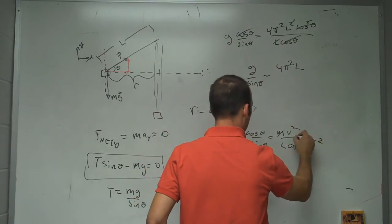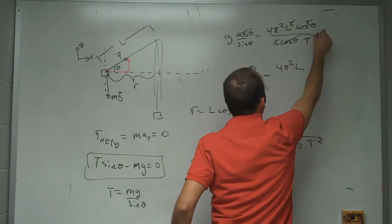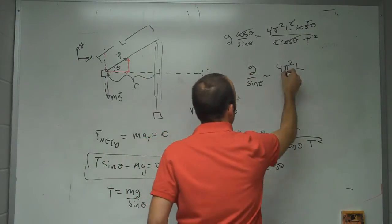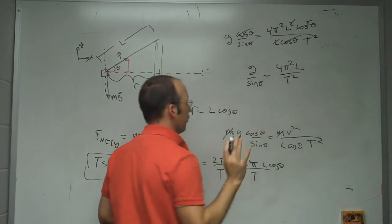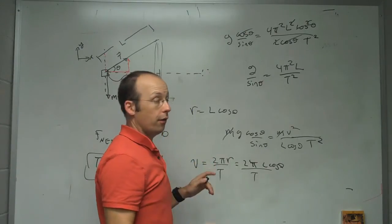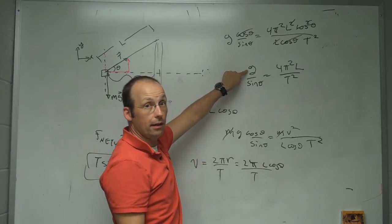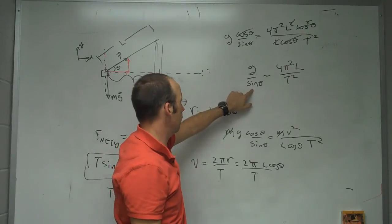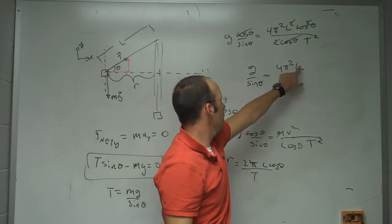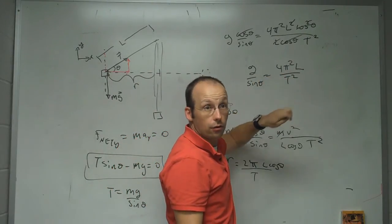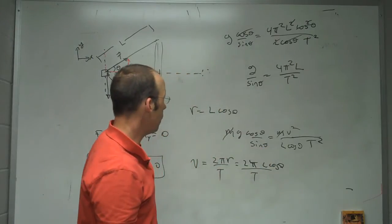So, it should be T squared down here, T squared right there, T squared. Let's just check real quick, because, you know, you never know if you're going to make a mistake. The units for g could be written in meters per second squared. That has no units. No units. Meters. Second squared. So, the units work out. Okay.